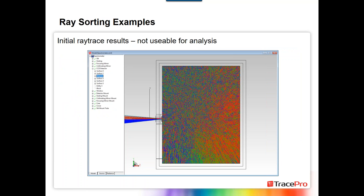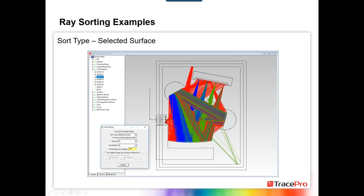Here are some examples of ray sorting. Here's the initial ray trace — light coming into the spectrometer through a grid source and slit. As you can see, it's not usable for analysis; we really have no idea what's happening with these rays. The first option is sort by selected surface. I opened up my detector object, selected the surface named 'detector' (the front face), opened Analysis, Ray Sorting, chose 'selected surface' for the sort type, and clicked Update. Here are the rays hitting that particular surface — we can see our specular rays at the four main focused points, but also scattered light and stray light.